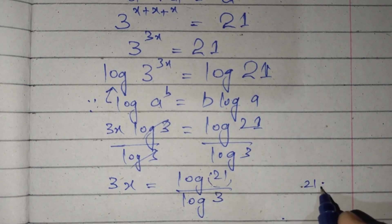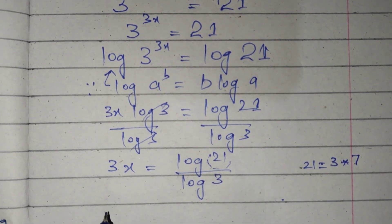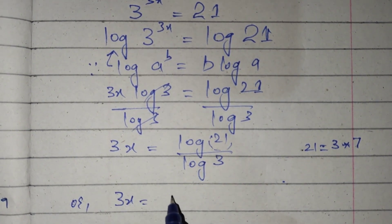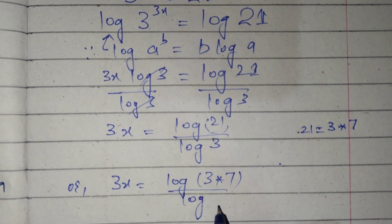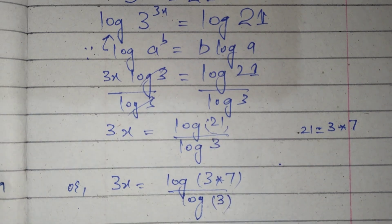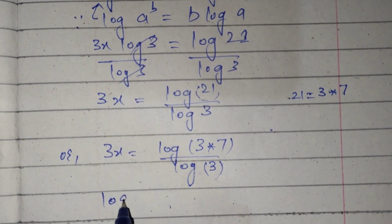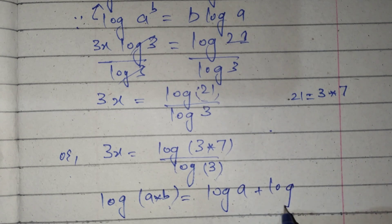Now 21 can be written as 3 times 7. We will use the formula: log of a times b equals log of a plus log of b.